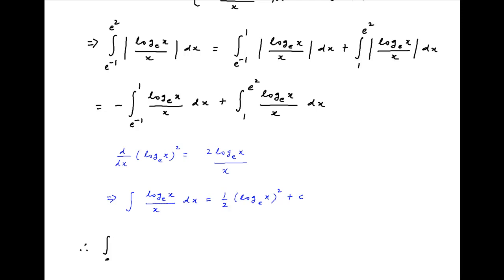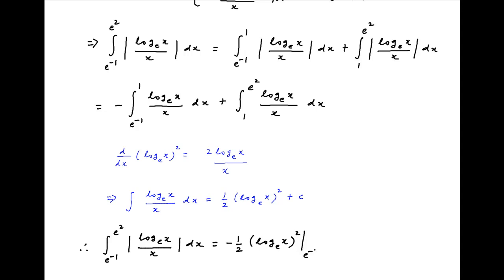Using this result, the given integral from e raised to the power minus 1 to e square of modulus of ln x upon x dx is equal to minus half of ln x whole square with limits e raised to the power minus 1 to 1, plus half of ln x whole square with limits 1 to e square.